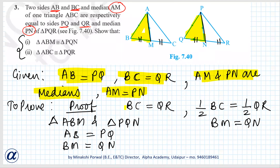Now BC equals QR, so half BC will equal half QR. If AM is a median, it divides BC into two equal parts. If PN is a median, it divides QR into two equal parts. So half BC equals half QR, or BM equals QN.